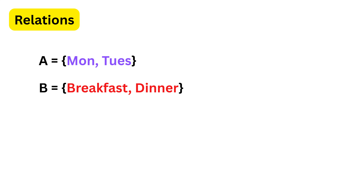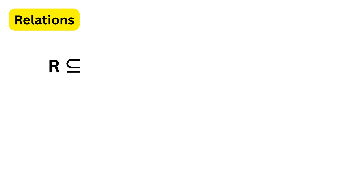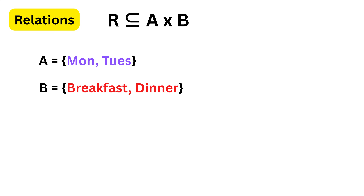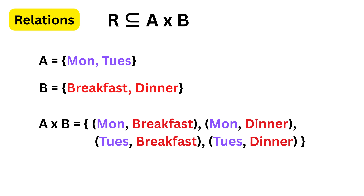So you can think of the Cartesian product as a complete list of all possible connections between two sets, written using ordered pairs. Now we are ready to move to relations, which simply means how elements of one set are related to elements of another set. Mathematically speaking, a relation is a subset of the Cartesian product A cross B. This means we start with the Cartesian product and then select only some ordered pairs that satisfy our rule.